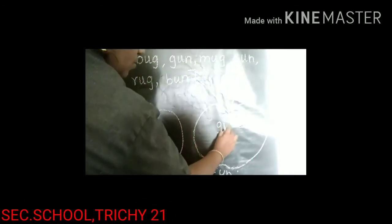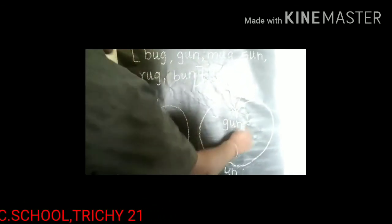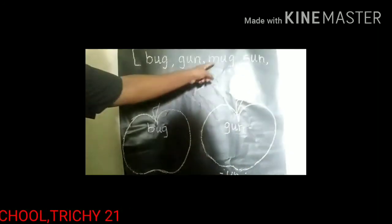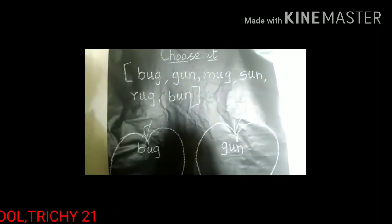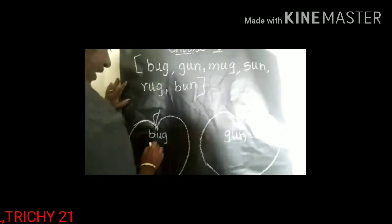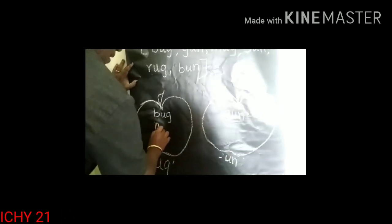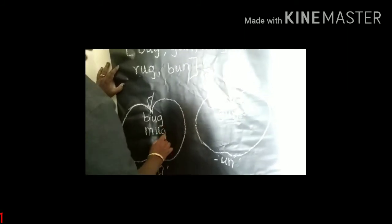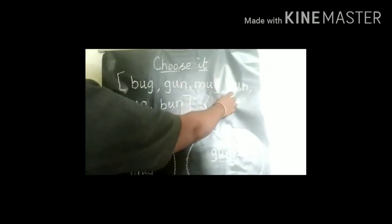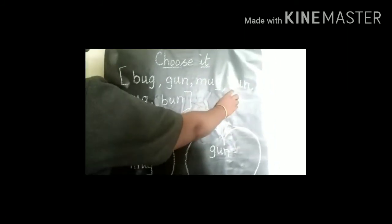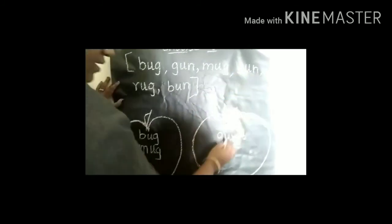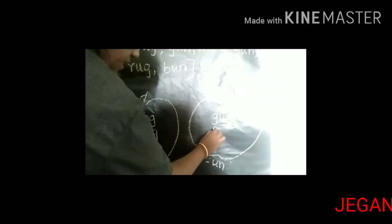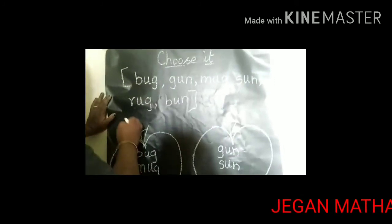G, U, N — Gun goes in the Un column. Next: M, U, G — Mug. Where should we write? In the first column. M, U, G — Mug. See the fourth word: S, U, N — Sun. We should write it in the Un column because this word contains an Un family word.